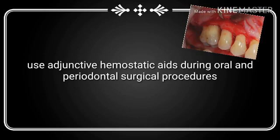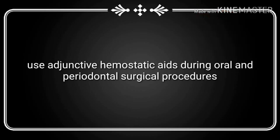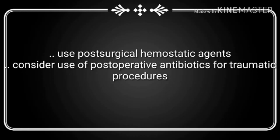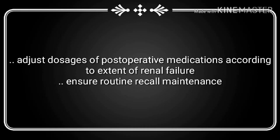Use adjunctive hemostatic aids during oral and periodontal surgical procedures. After treatment, use post-surgical hemostatic agents and consider the use of post-operative antibiotics for traumatic procedures. Adjust dosages of post-operative medications according to the extent of renal failure, and ensure routine recall maintenance.